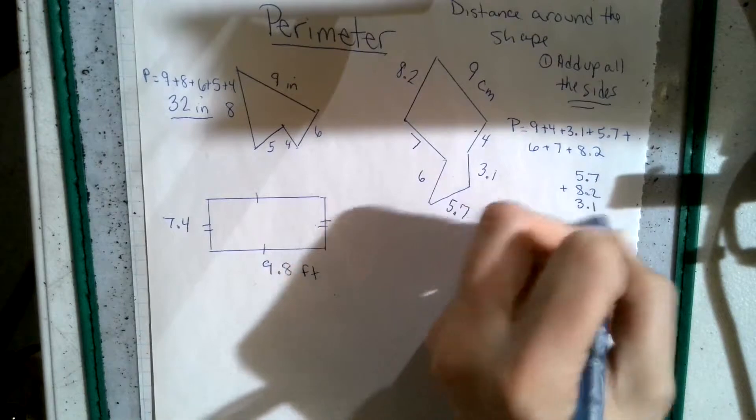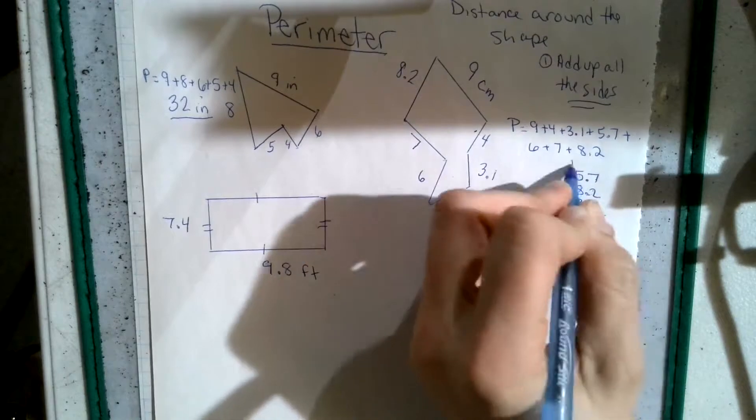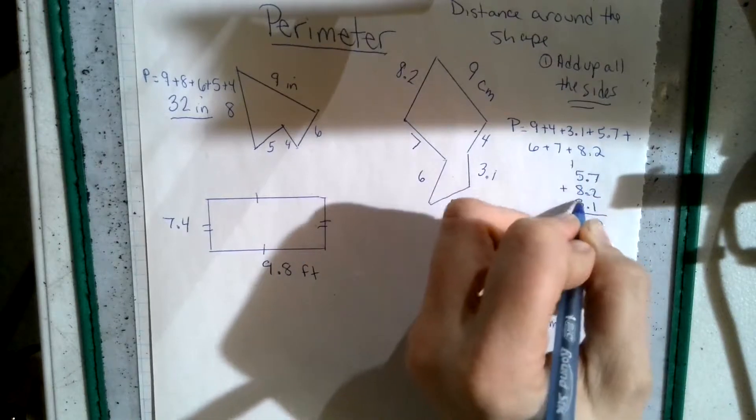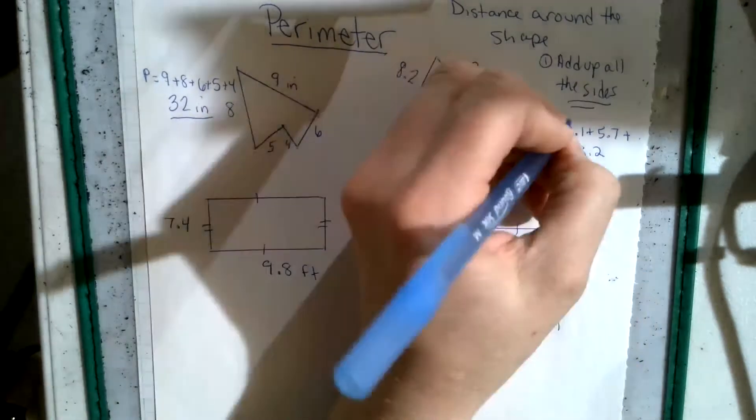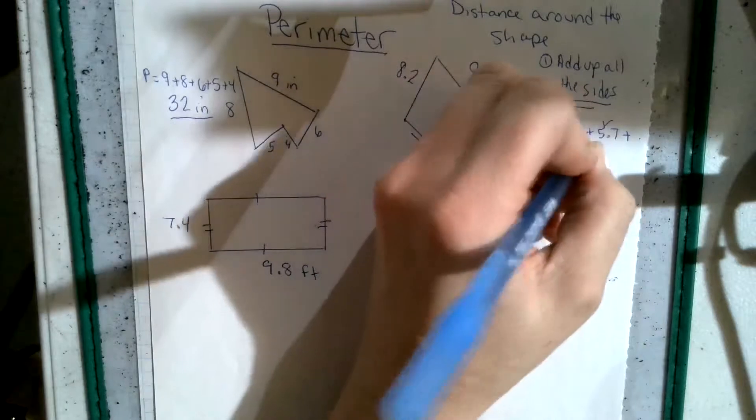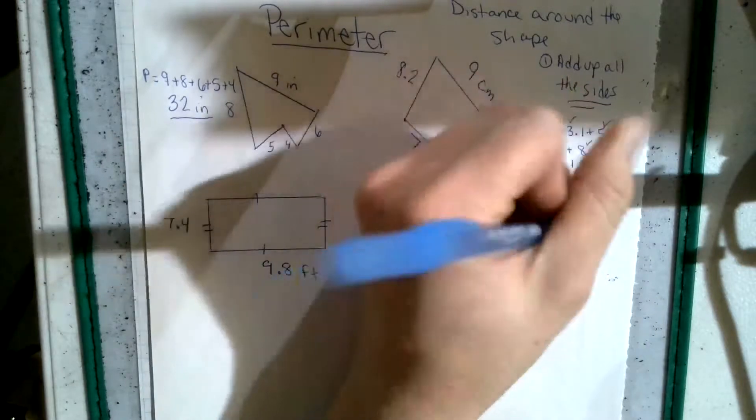So 7, 8, 9, 10, 5, 6, 14, 15, 16, 17. Drop my decimal straight down. So the three decimals, this one, this one, and the 8.2 all out of 17.